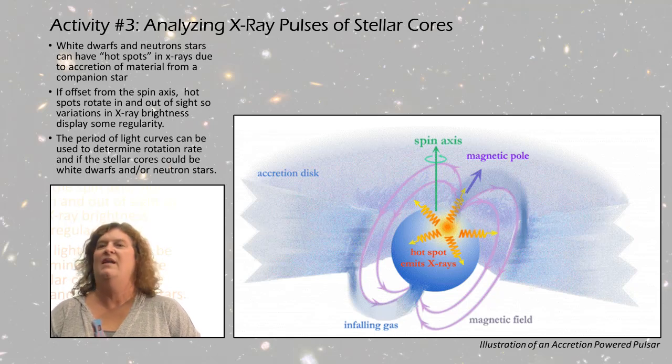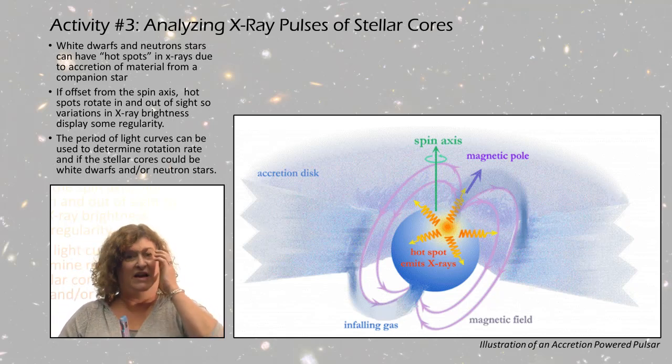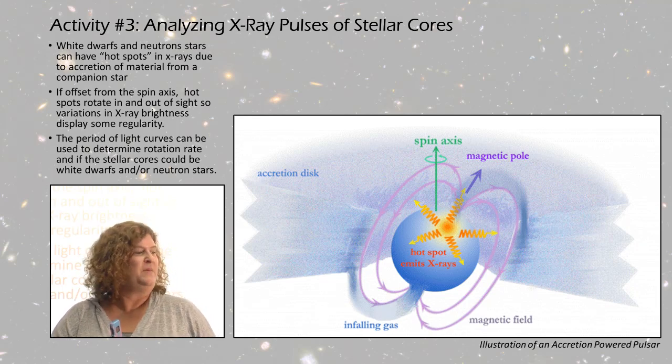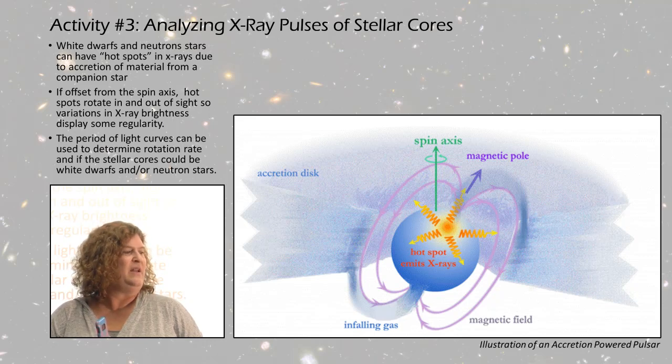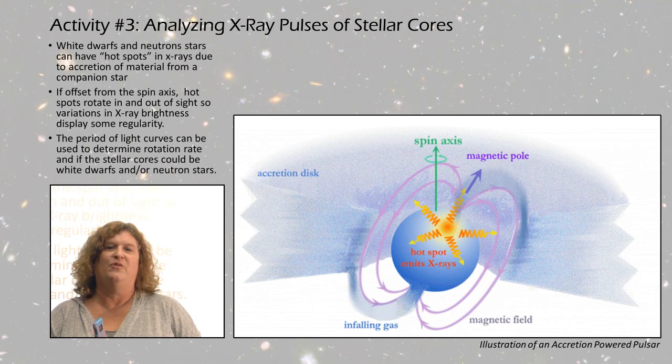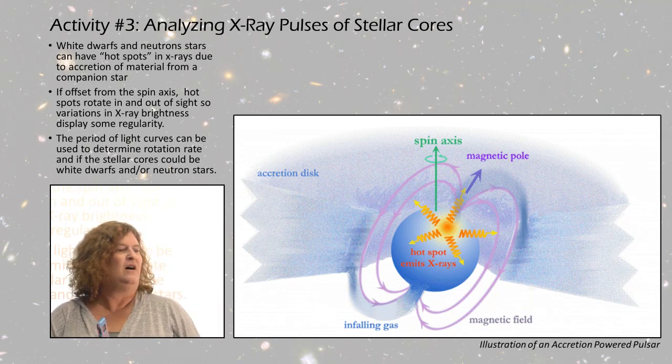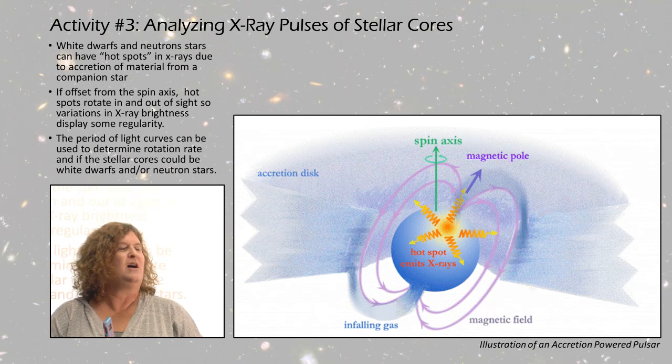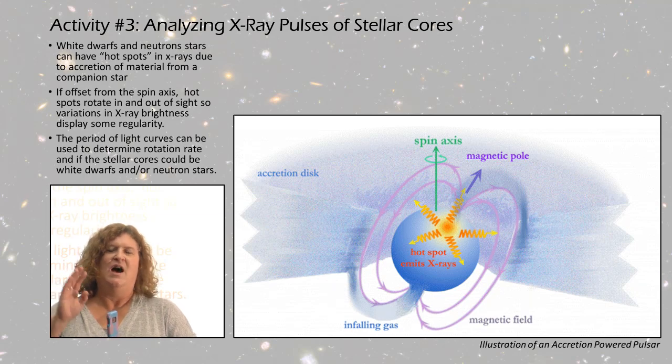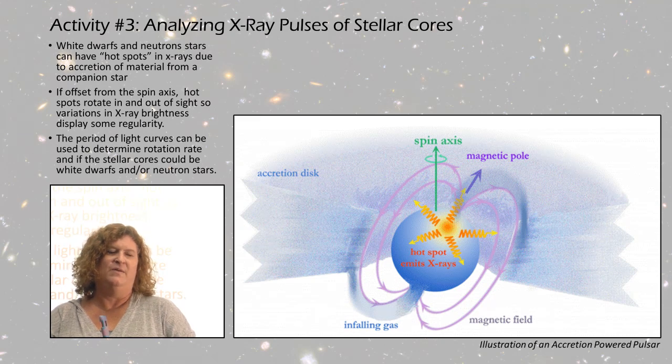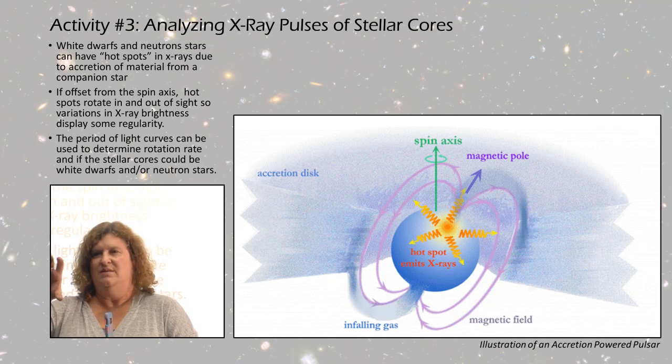The third activity introduces students to light curves, which plots light intensity over time. White dwarfs and neutron stars can have hot spots on them due to accretion of material from a companion star. It's like a lighthouse. If that hot spot is offset from the spin axis, as that stellar core spins, that hot spot would go in and out of our sight.